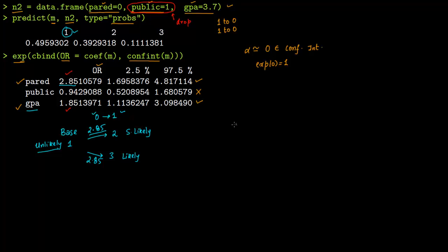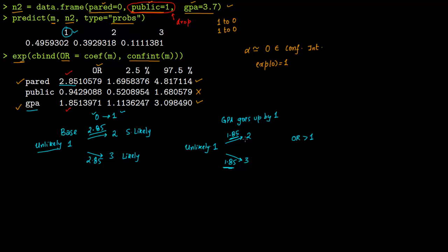Similarly for GPA: when GPA increases by 1 unit, the odds of going from unlikely (1) to slightly likely (2) increase by 1.85, and from unlikely (1) to likely (3) also increase by 1.85. Since the odds ratio is greater than 1, this confirms that a higher GPA makes the student more likely to apply compared to the base case of unlikely.